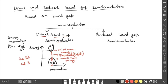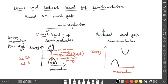When we come to indirect bandgap semiconductors, let us look at the diagram. In this energy-momentum graph, the lower curve is the valence band and the upper curve is the conduction band. Holes are present in the valence band and electrons are present in the conduction band. From the diagram, we can see clearly that holes in the valence band have very low momentum, while electrons in the conduction band have high momentum.